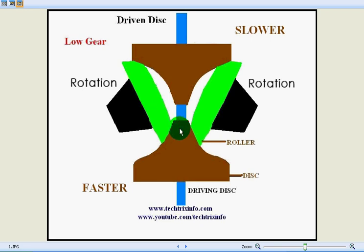In this section, the rollers are engaging towards the center of the driving disc and towards the rim of the driven disc. This is a low gear system - almost like the first gear of a manual transmission with a high amount of torque and less speed. This is used when we drive uphill.